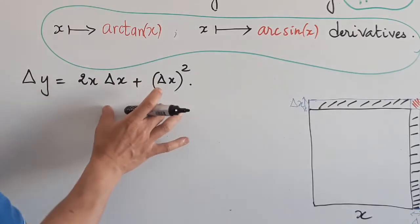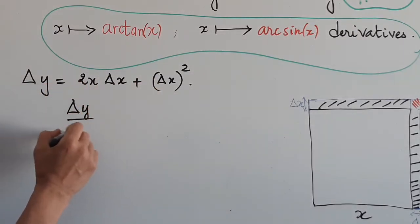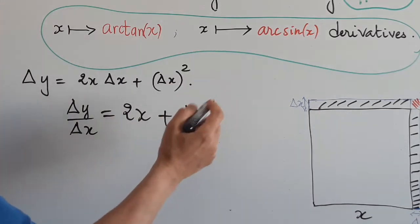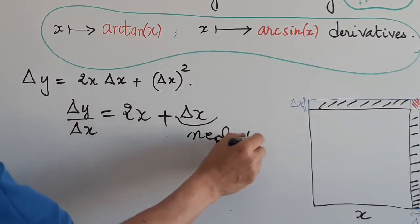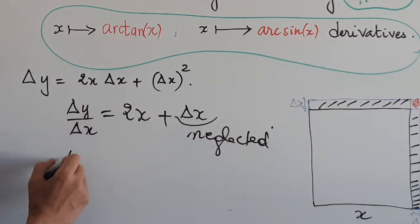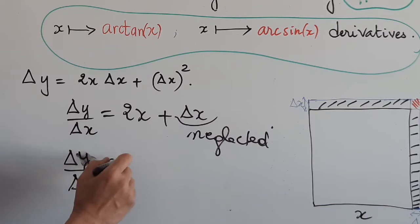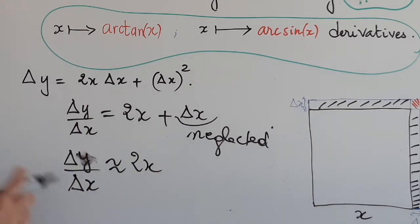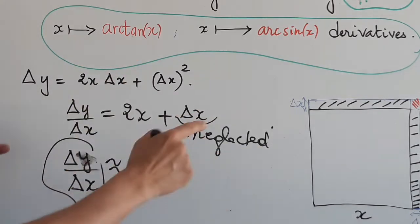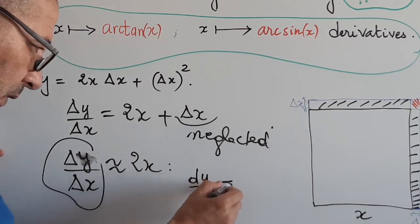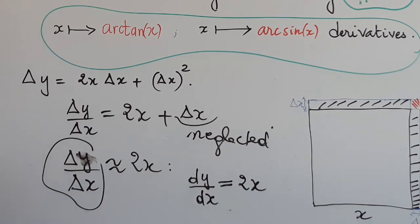From this equality, we obtain delta_y/delta_x equals 2x plus delta_x. This quantity delta_x may be neglected, which allows Newton to note that delta_y over delta_x is 2x. The ultimate ratio, following Newton, will be denoted by Leibniz as dy/dx equals 2x, which is the derivative as we know.